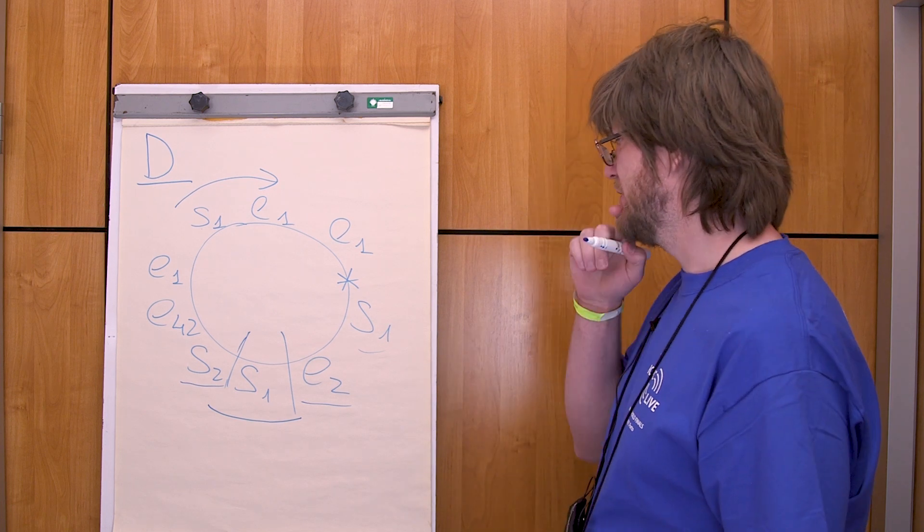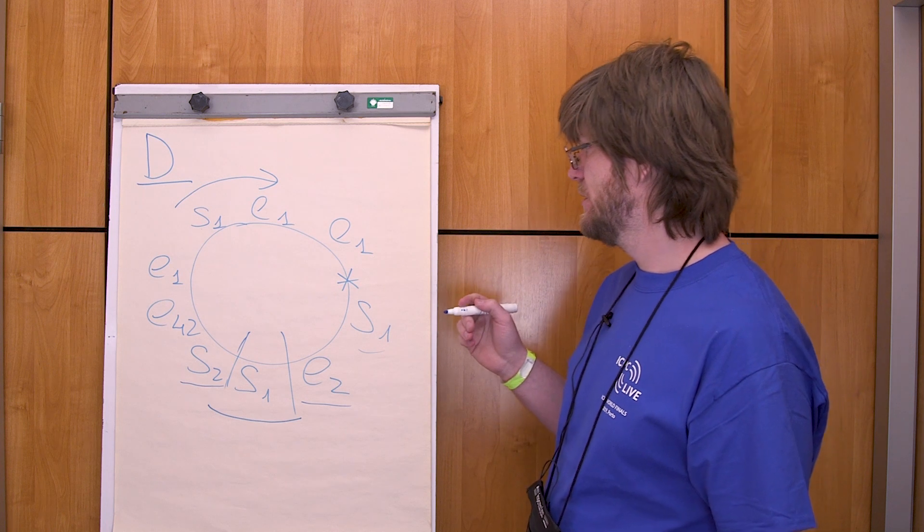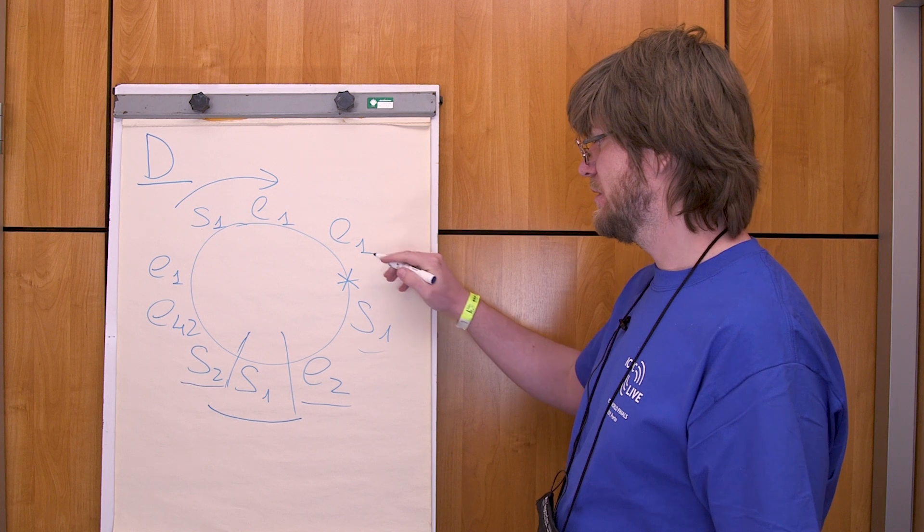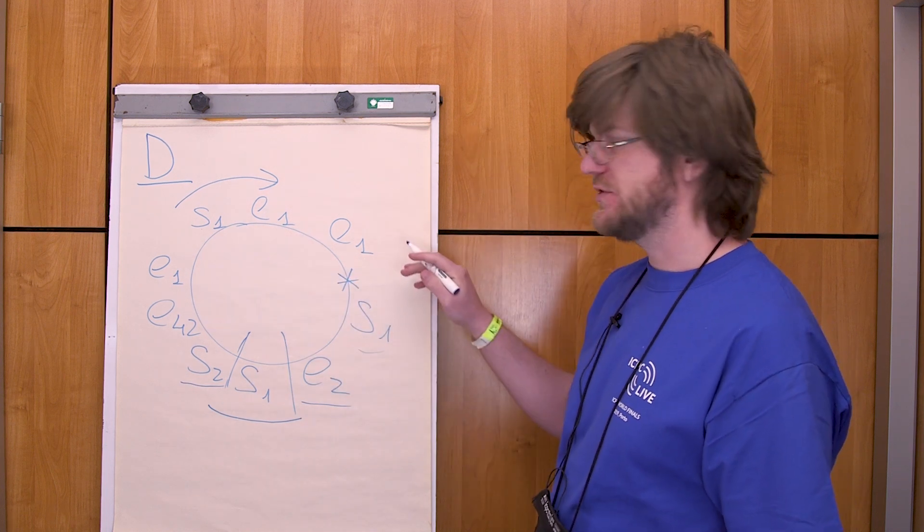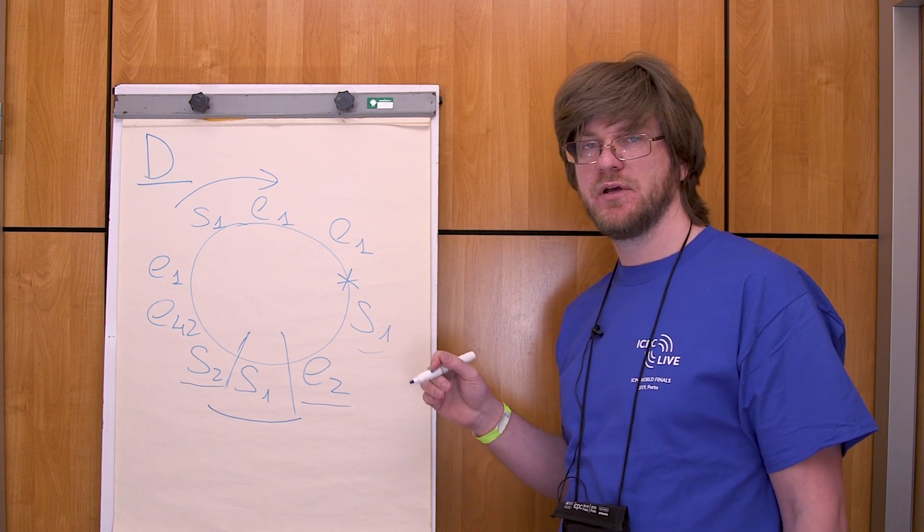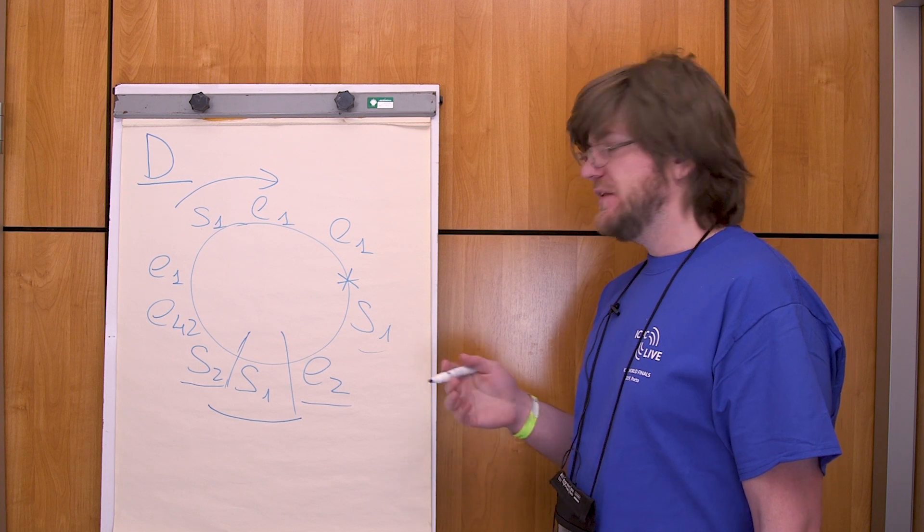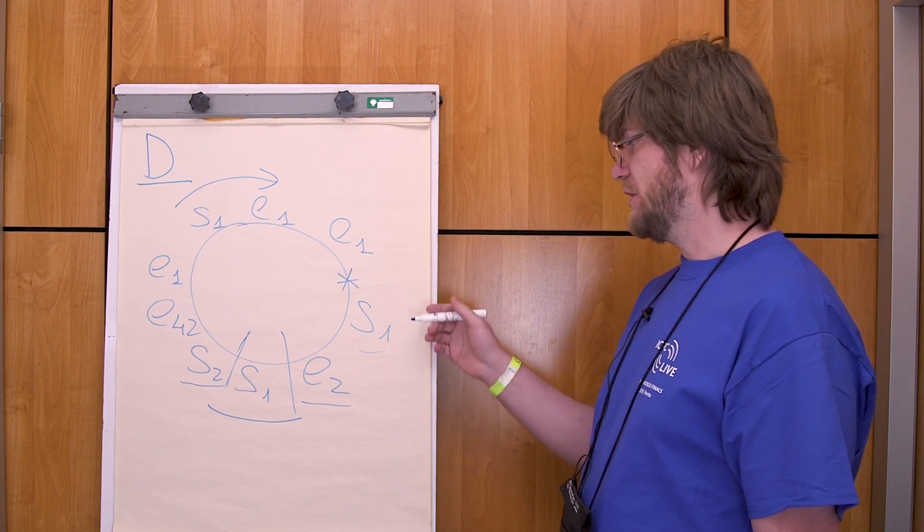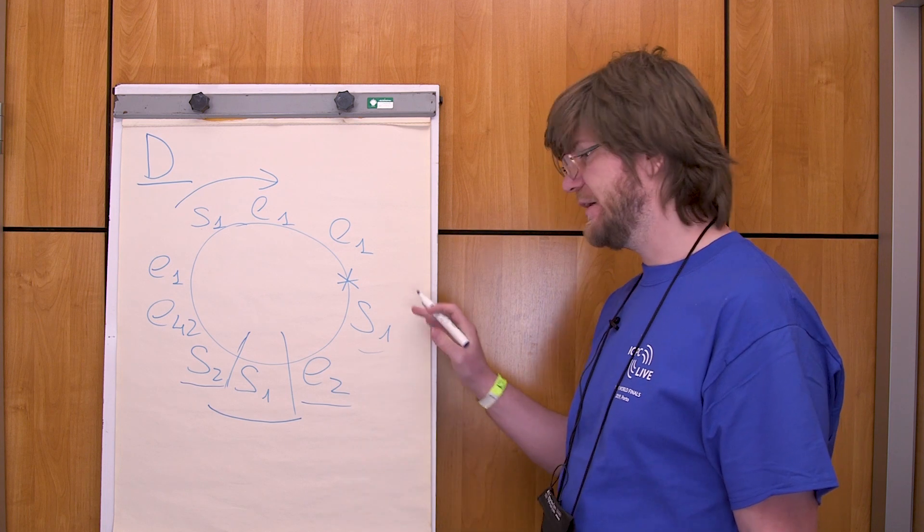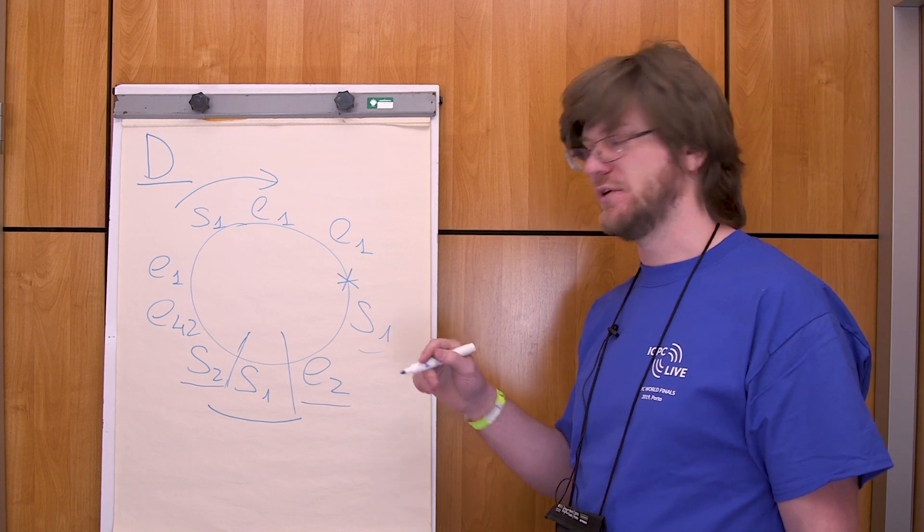How to implement this most easily? First, you pick some point and start going by the circle from this point, and for each marker type you maintain the counter of how many opening brackets of this type are there minus how many closing brackets are there.